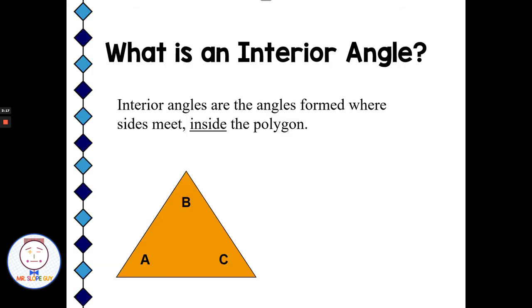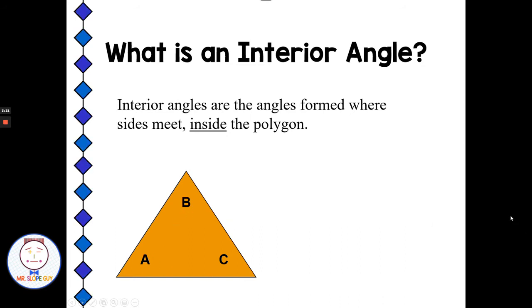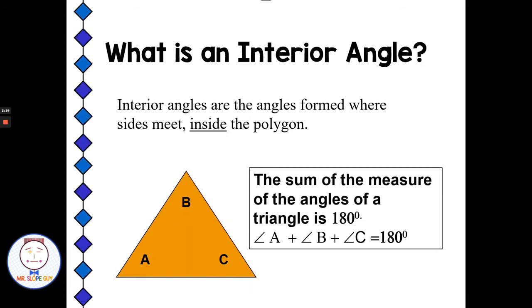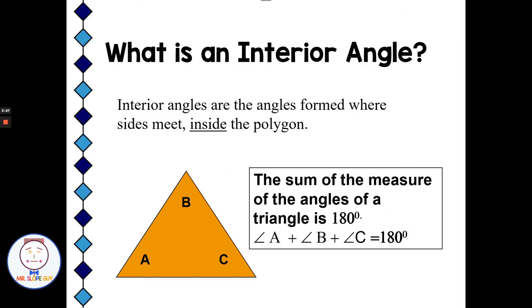The interior angles are the ones inside the polygon. Here we have a regular triangle, and the interior angles are formed where the sides meet inside the polygon — we have angles A, B, and C. Write this down, most important thing of the day: the sum of the measures of the angles of a triangle is 180 degrees. It doesn't matter what kind of triangle you have — the interior angles will always add up to 180 degrees for every triangle, every scalene, every right triangle, every obtuse triangle.